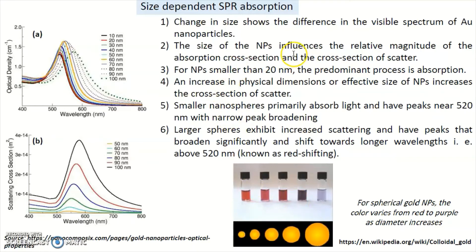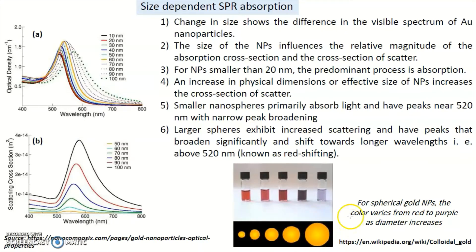The size of the nanoparticles influences the relative magnitude of the absorption cross-section and scattering cross-section. The absorption cross-section and scattering cross-section are both sensitive to the size of the nanoparticles, and we will try to understand this slowly.